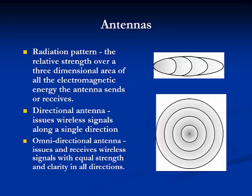Antennas are designed according to their radiation pattern, which is the relative strength over a three-dimensional area of all the electromagnetic energy the antenna sends or receives. There are two types of antennas based on their radiation patterns. Directional antennas issue wireless signals along a single direction, and omnidirectional antennas issue and receive wireless signals with equal strength and clarity in all directions.